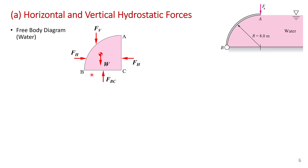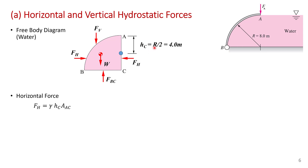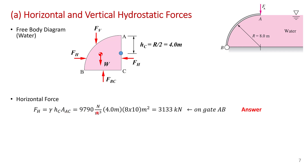I've reproduced the free body diagram for the water showing all the forces on this little disk of water adjacent to the gate. Starting with the horizontal force: surface AC is a vertical surface, so the horizontal force equals the specific weight times the depth of the centroid times the surface area. The centroid is at R/2 = 4 meters, and the surface area is 8 m × 10 m = 80 square meters. So: 9790 × 4 × 80 = 3133 kilonewtons. The force of the water on the gate is to the left, and that's part of the answer for part A.